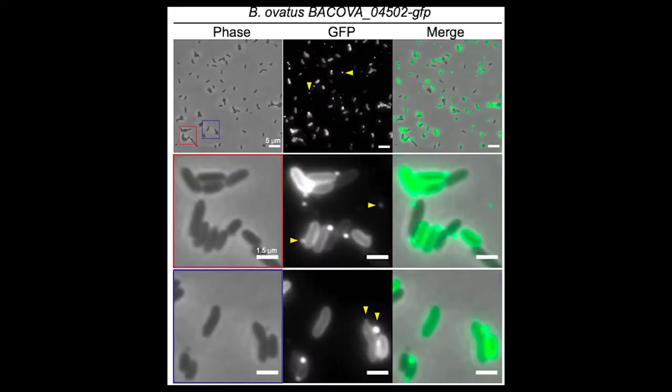This was the first time that scientists could see the type 6 secretion system and other cellular processes in these bacteria, which means we can study them better.